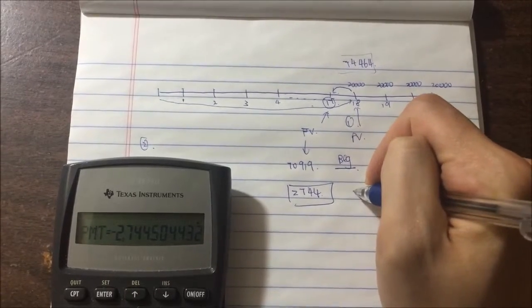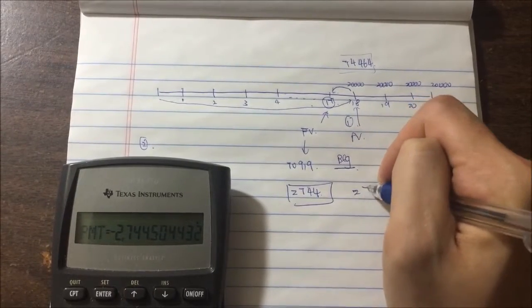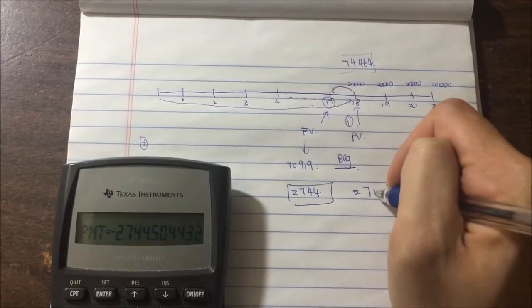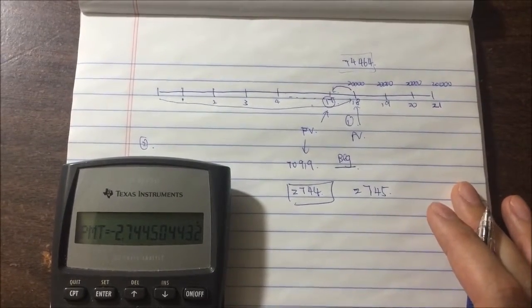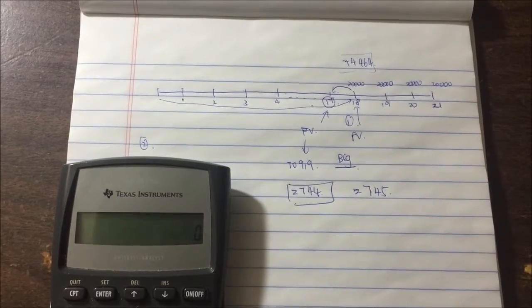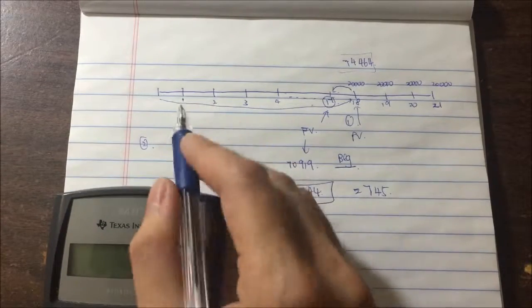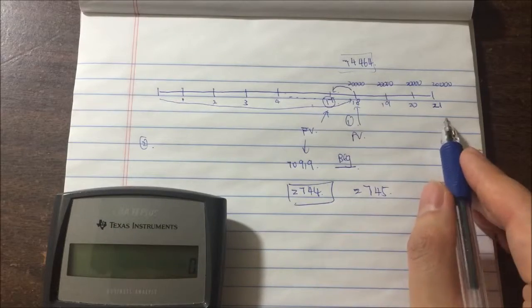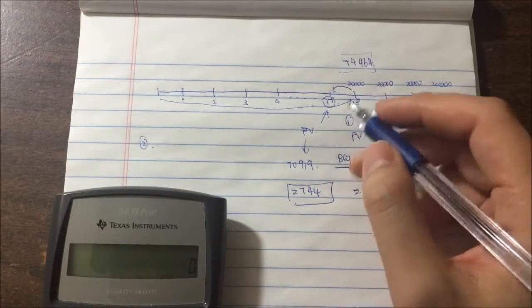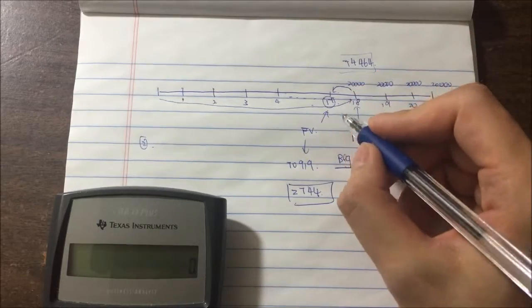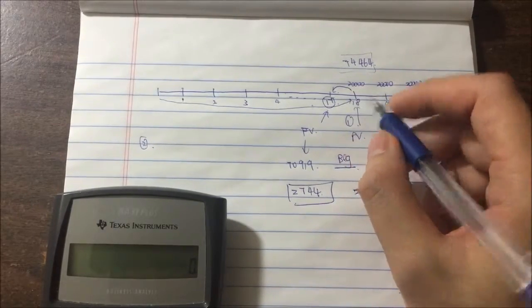On the answer choices, it's $2,745, so we choose the closest answer. That's how we tackle the problem. First, make sure you draw a timeline. Second, find out what is the present value and future value at the particular points you're calculating.